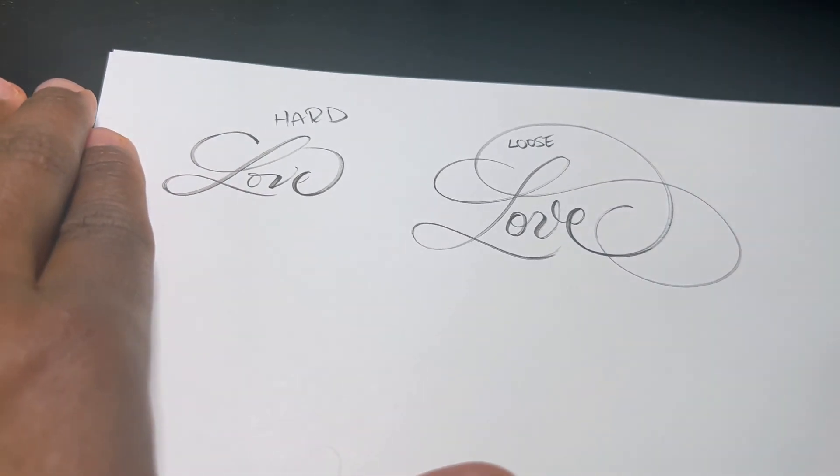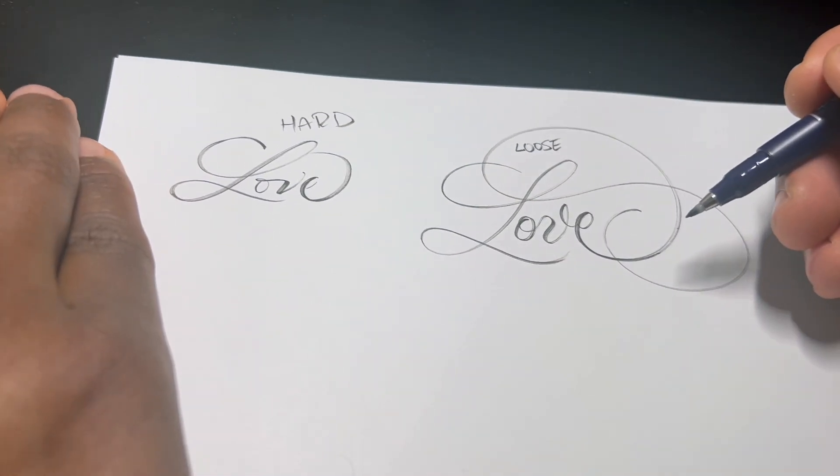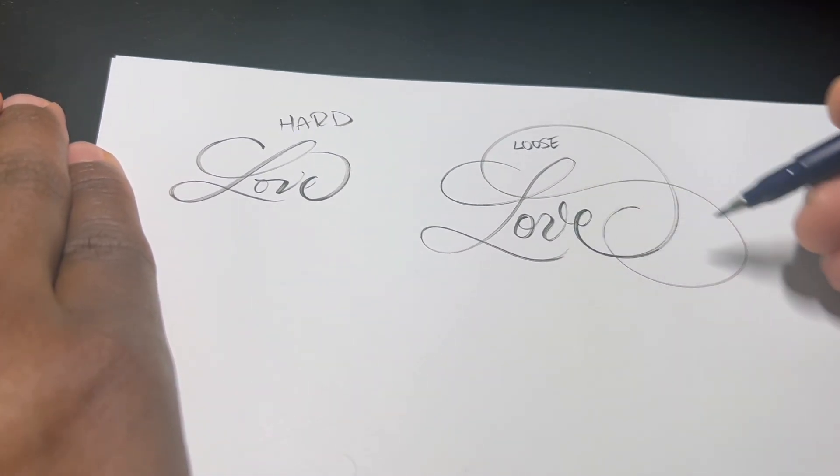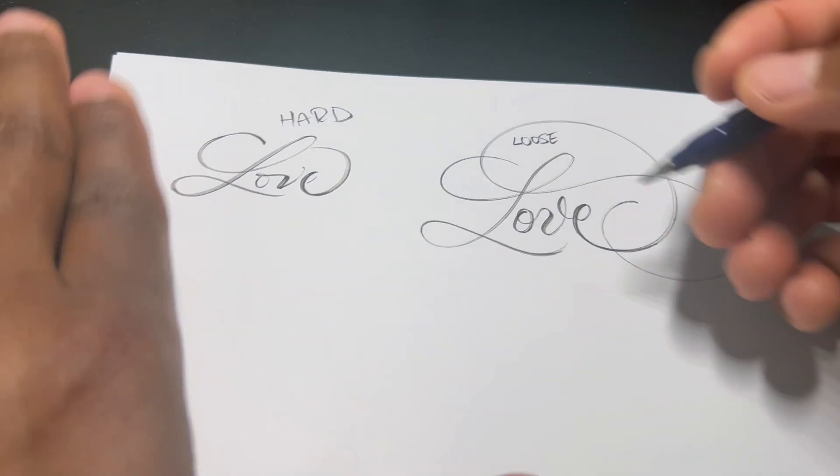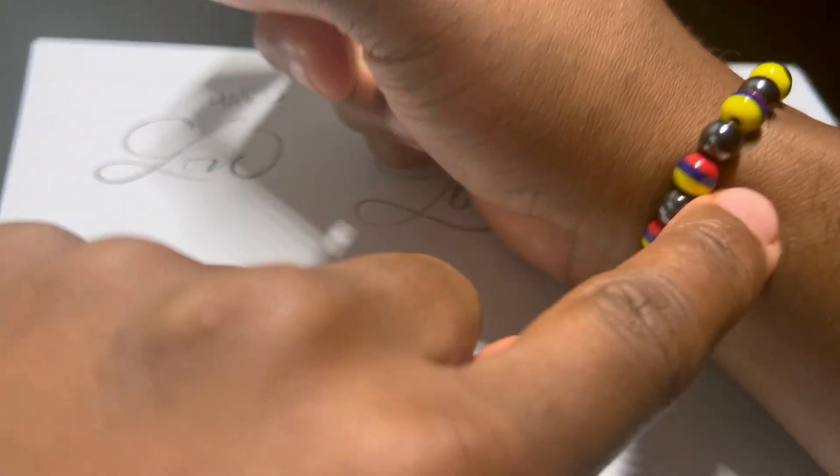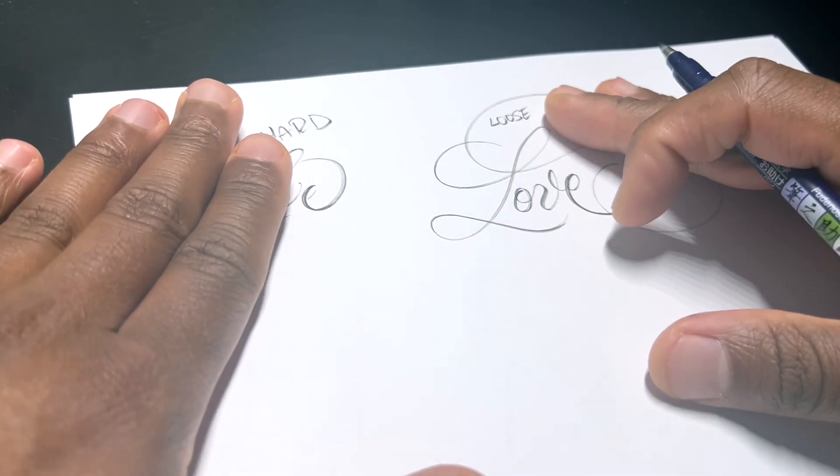Also, another thing I will say about having a nice loose grip is that whenever you get the flourishing down, it is a lot simpler to do because your hand just moves across the paper very easily and you're not straining any of these muscles here.